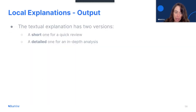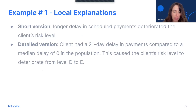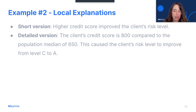So how does this output look? It's a textual explanation with two versions: a short one for a quick review and a detailed one for an in-depth analysis. First example — short version: 'A longer delay in scheduled payments deteriorated the client's risk level.' Detailed version: 'The client had a 21-day delay in payments compared to a median delay of zero in the population. This caused the client's risk level to deteriorate from level D to level E.' Another example — short version: 'A higher credit score improved the client's risk level.' Detailed version: 'The client's credit score is 800 compared to the population median of 650. This caused the client's risk level to improve from level C to level A.'